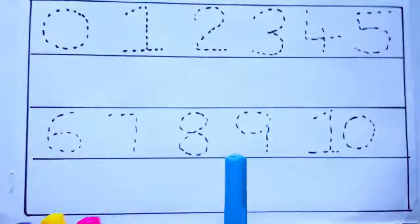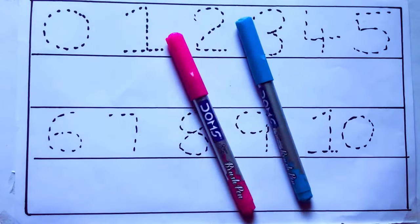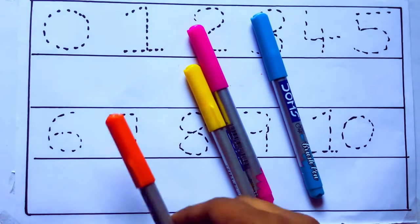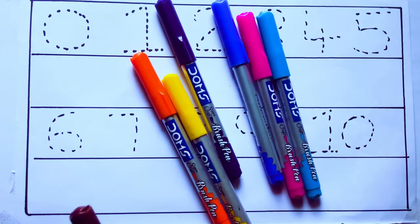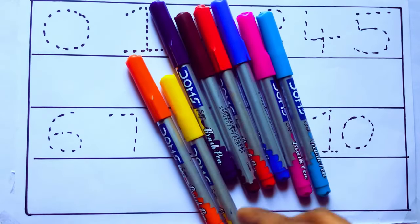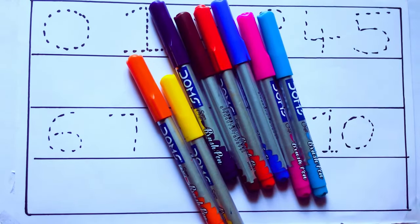Let's learn the names: sky blue color, pink color, yellow color, orange color, violet color, blue color, brown color, red color, green color.